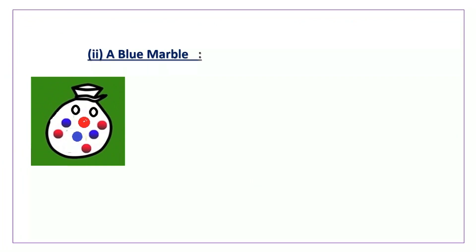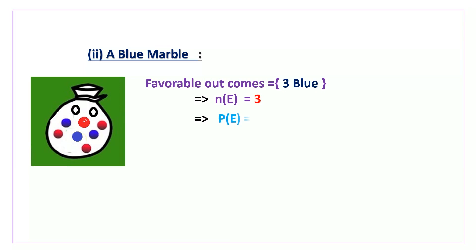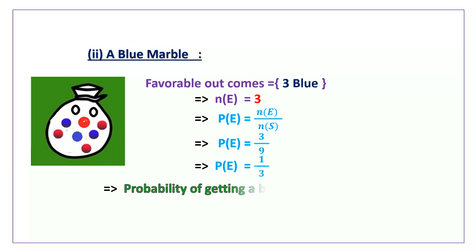Now let us consider taking a blue marble from the bag. Here the favorable outcomes are 3 blue marbles, so n of e is equal to 3. p of e equals n of e by n of s, which implies p of e is equal to 3 by 9. Upon simplification, p of e is equal to 1 by 3. So the probability of getting a blue marble is equal to 1 by 3.